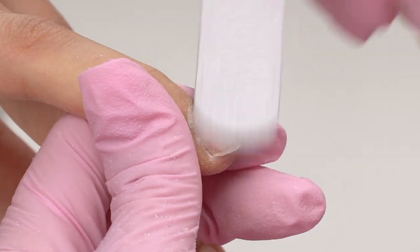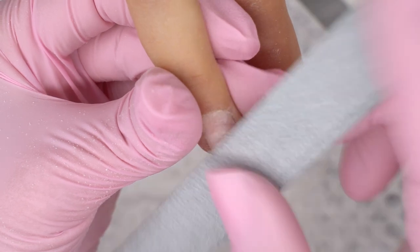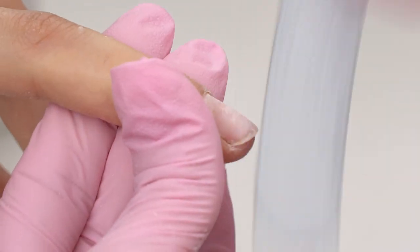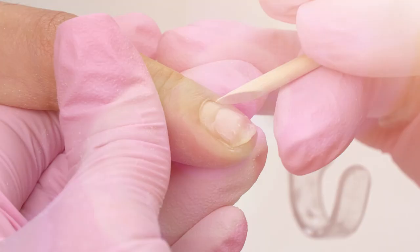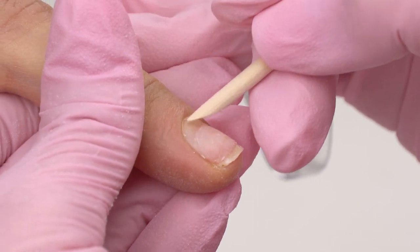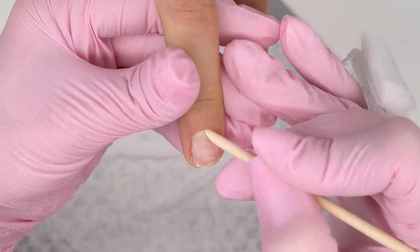I'll be using gel. For dual forms, it's super convenient. But I'll get back to it, let's focus on the manicure now. To avoid overfiling, make sure to open up the cuticle and form a pocket with an orange stick or a pusher.